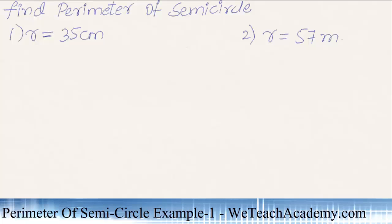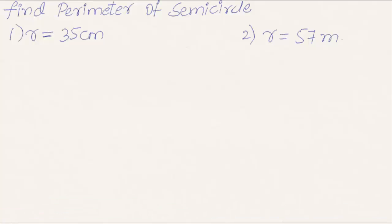Welcome to vdchacademy.com. In this presentation we are going to discuss an example on semicircle. The given examples are to find the perimeter of a semicircle when radius is equal to 35 centimeters and radius equal to 57 meters.